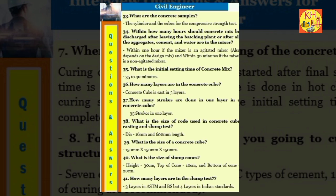Question 37: How many strokes are done in one layer in a concrete cube? 35 strokes in one layer. Question 38: What is the size of rod used in concrete cube casting and slump test? D are 16 millimeters and 600 millimeters length. Question 39: What is the size of a concrete cube? 150 millimeters by 150 millimeters by 150 millimeters. Question 40: What is the size of slump cones? Height 30 centimeters, top of cone 10 centimeters, and bottom of cone 20 centimeters.